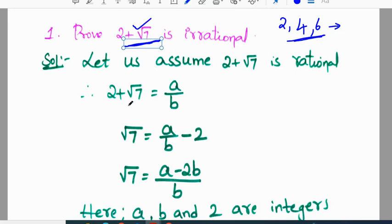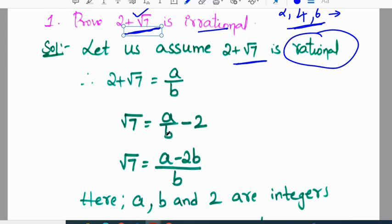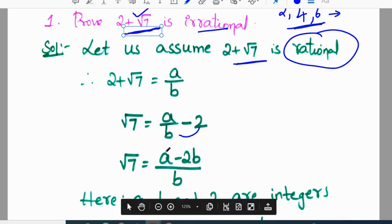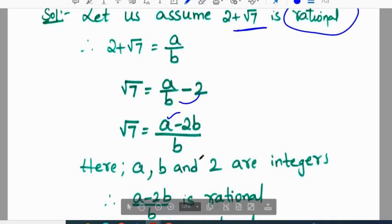So, 2 plus root 7, let us assume 2 plus root 7 is rational. To prove irrational number, we have to assume it is a rational. Rational number A by B, we have to equate this number with A by B. So root 7 is equal to A by B plus 2 goes to other side will become minus 2, which is A minus 2B all by B. Clearly A, B and 2 are integers.